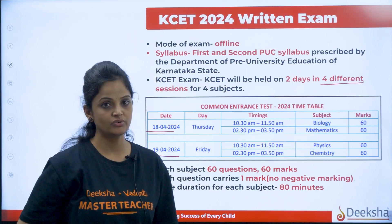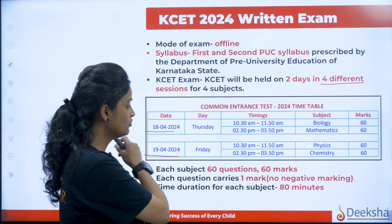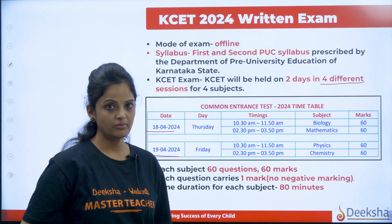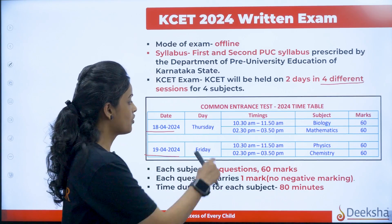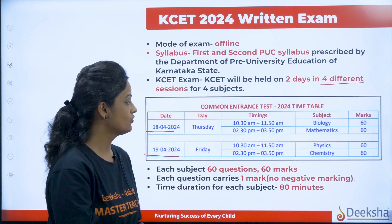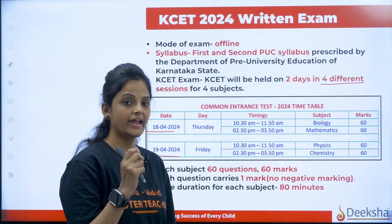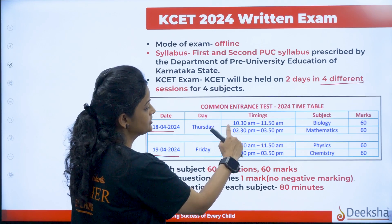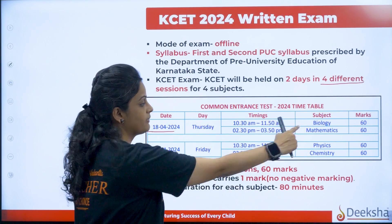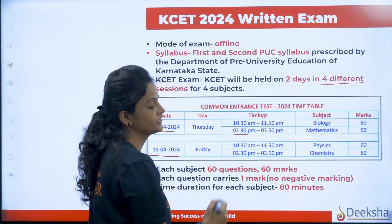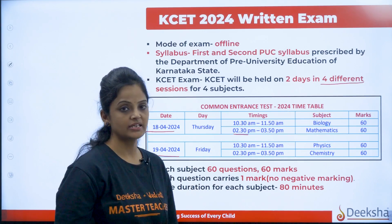See the choice of your subjects — which three you are attempting or all four you are writing. Make a note of the timetable so that you shouldn't miss any subject. On Thursday, that is 18th of April, you will have biology and mathematics. 80 minutes will be there. Biology is from 10:30 to 11:50 a.m. and mathematics you have from 2:30 to 3:50 p.m. 60 marks each subject.